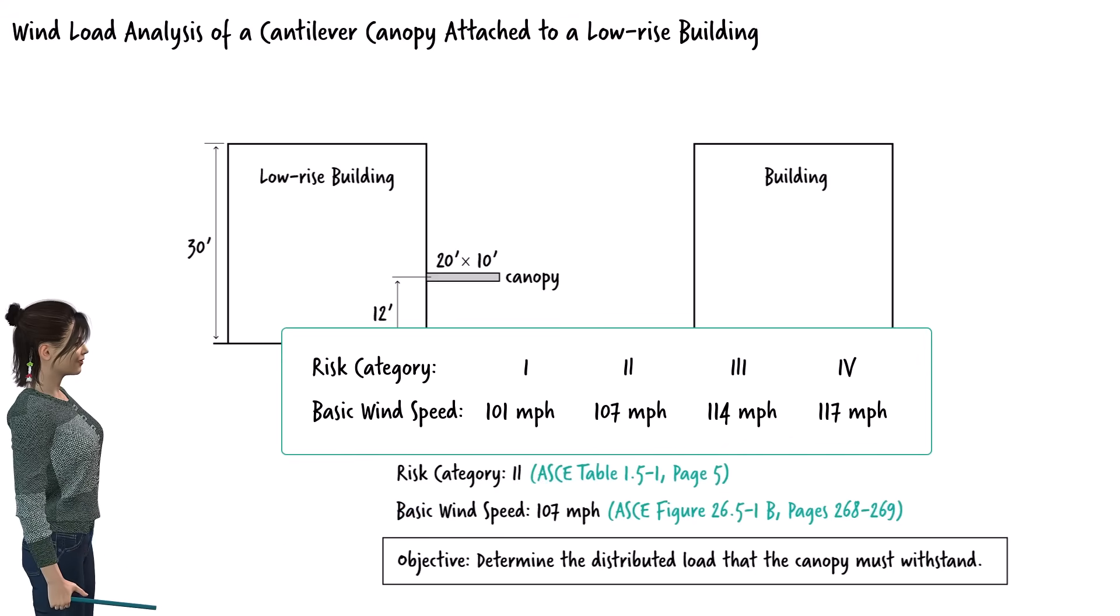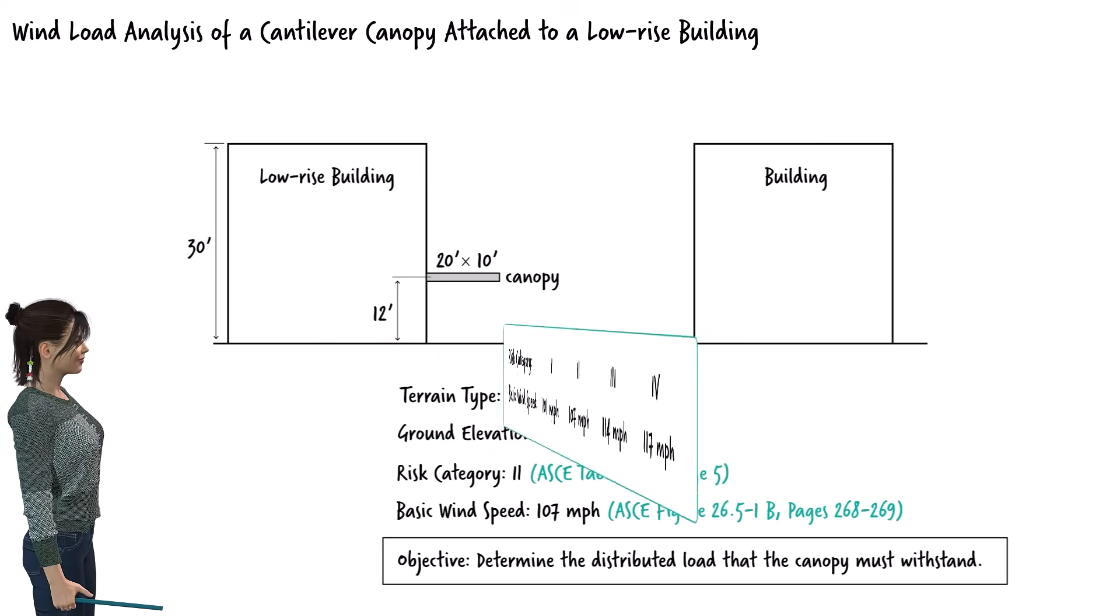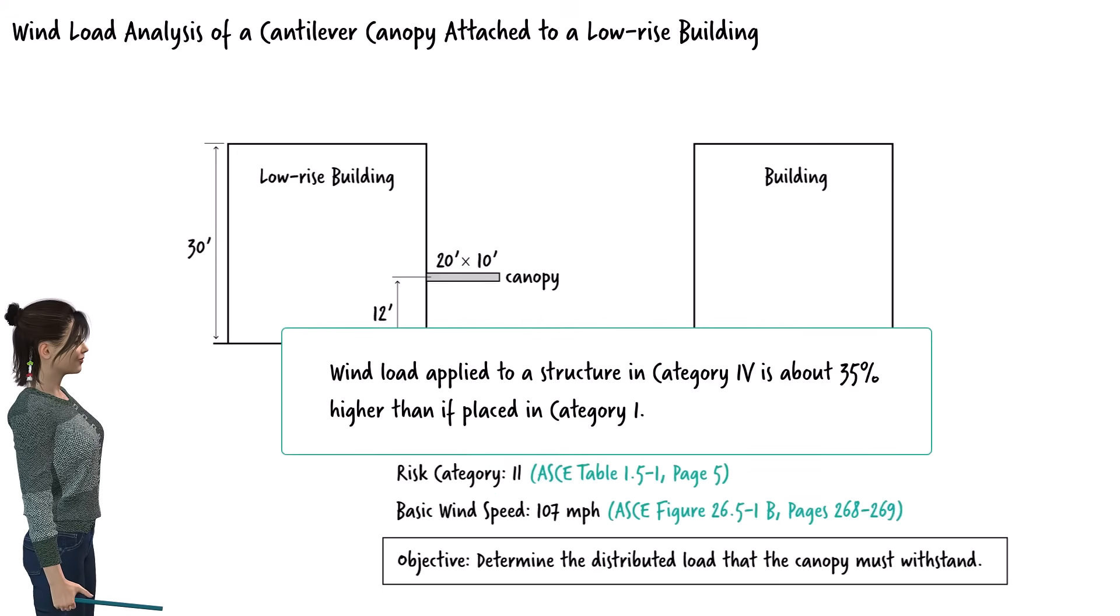These differences in basic wind speed affect the design outcome in measurable ways. For example, the wind load applied to a structure in risk category 4 is about 35% higher than if placed in risk category 1.